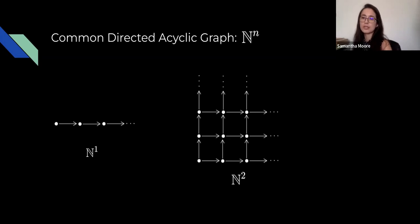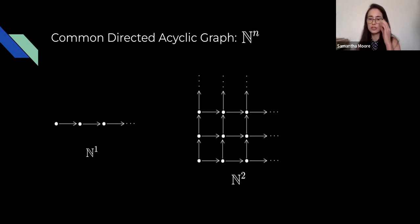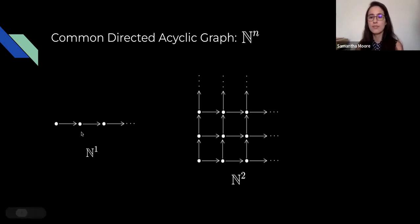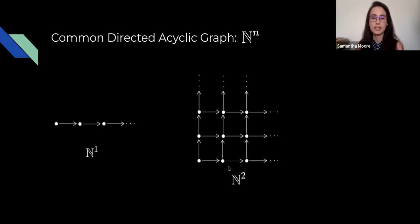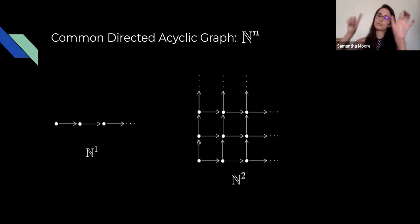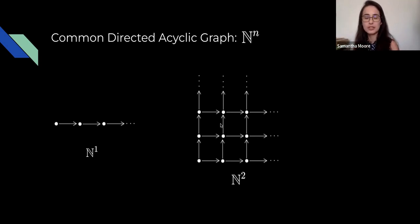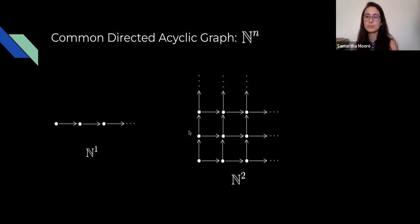Classically, persistence modules have used underlying graphs based on N^n with the typical lattice structure. For N^1, we put a point at each element and arrows from n to n+1. For N^2, we put a vertex at each point in N^2 with arrows from p to p+(0,1) and p+(1,0), and so forth. The focus of today's talk is on N^2 persistence modules, also called two-parameter persistence modules.